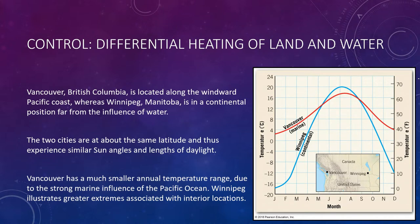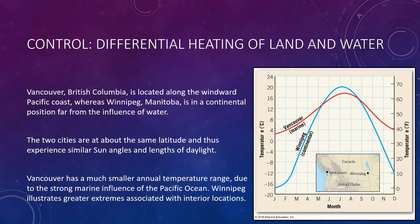Monthly temperature data for two cities demonstrates the moderating influence of a large body of water. Vancouver, British Columbia is located along the windward Pacific coast, while Winnipeg, Manitoba is a continental city far from the influence of water. The two cities are at about the same latitude and thus experience similar sun angles and lengths of daylight. However, Winnipeg has a mean January temperature that is 20 degrees lower than Vancouver's, while Winnipeg's July mean is 2.6 degrees Celsius higher than Vancouver's. Although their latitudes are nearly the same, Winnipeg experiences much greater temperature extremes. The key to Vancouver's moderate year-round climate is the Pacific Ocean.